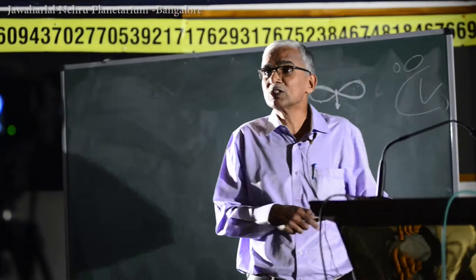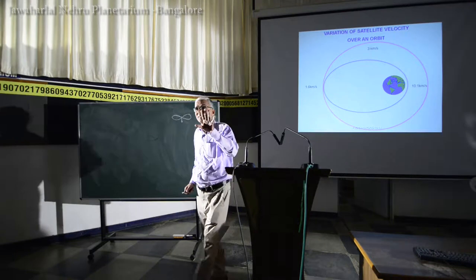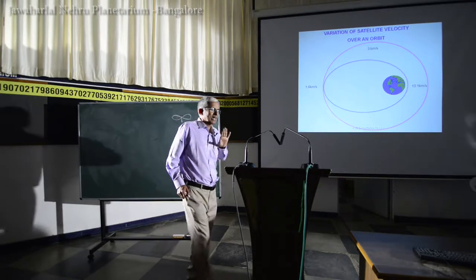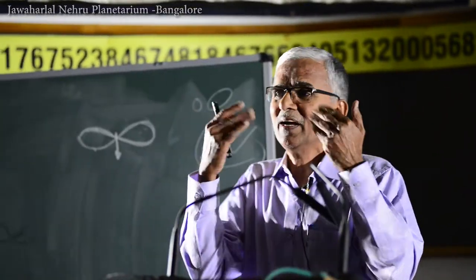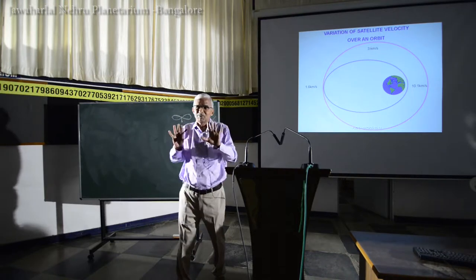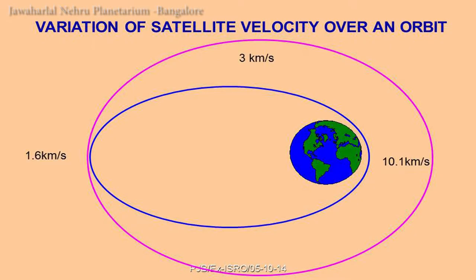Kepler's second law tells us that a satellite moves faster when near Earth and slower when farther. For an orbit at approximately 36,000 km altitude, velocity is about 1.6 km/s at apogee but 10.1 km/s at perigee. When passing near Earth, atmospheric drag reduces velocity — the satellite has solar panels with large cross-sections, causing atmospheric drag that reduces velocity over time. Repeatedly passing through the atmosphere causes the orbit to decay.